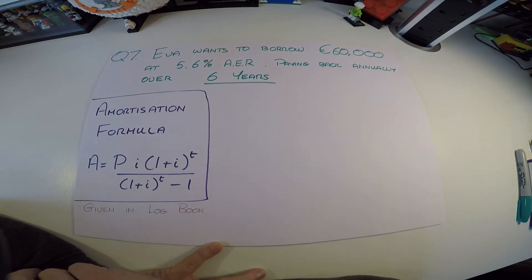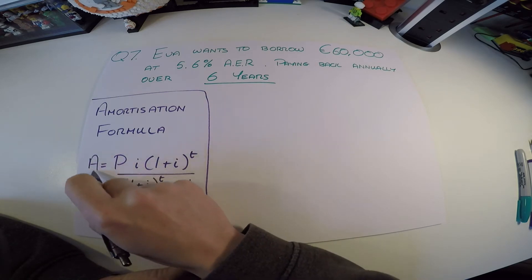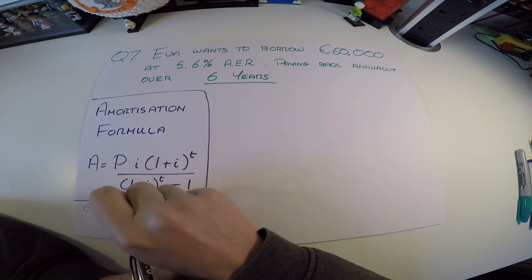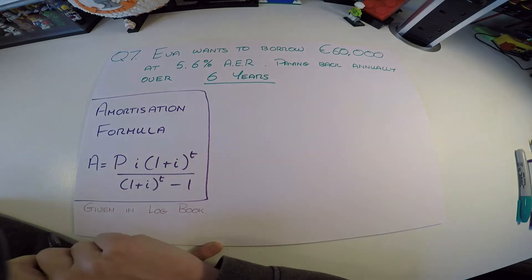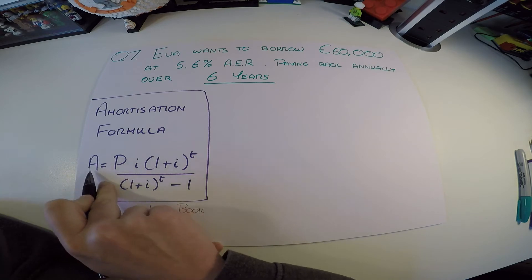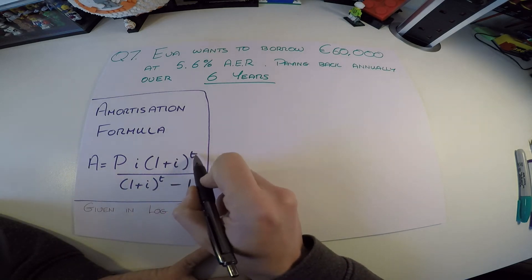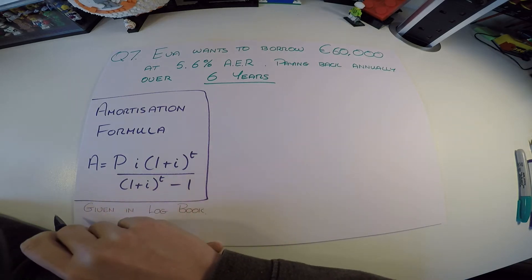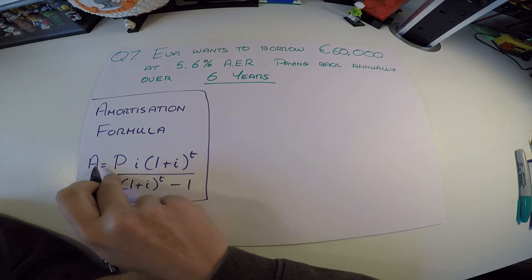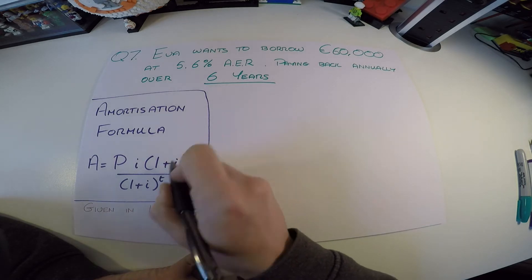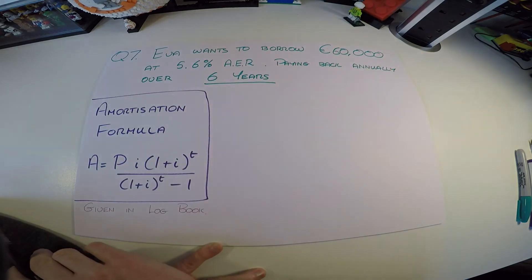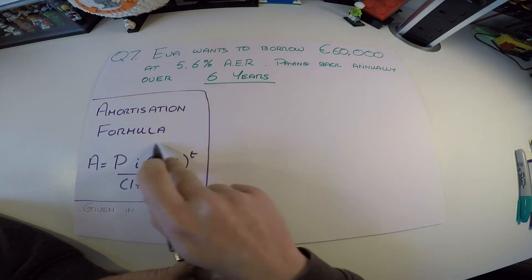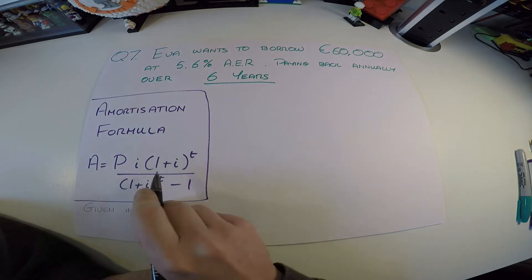A is going to be our repayment amount. We must make sure our interest rate and time relate well to this payment amount — since her payment is annual, her interest rate must be annual and her time must be annual. If it were a monthly mortgage repayment, we'd need a monthly interest rate and monthly time. Here we're fine because she pays back annually and the interest rate is given annually. Whenever you see a loan or mortgage repayment, always use this amortization formula.